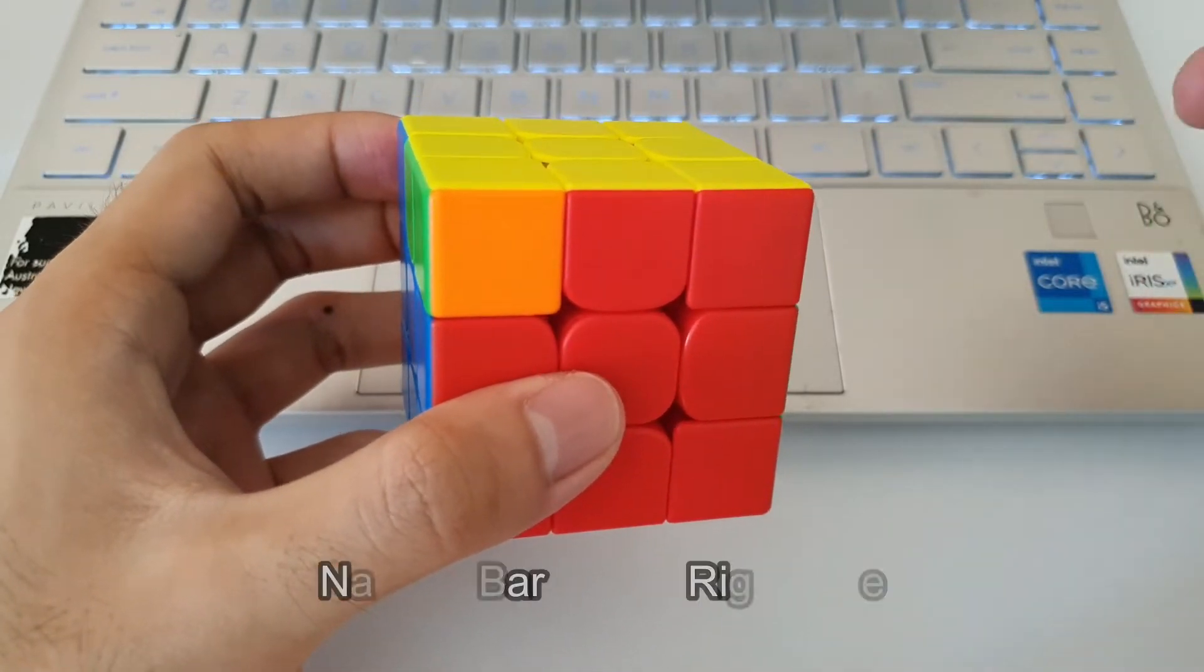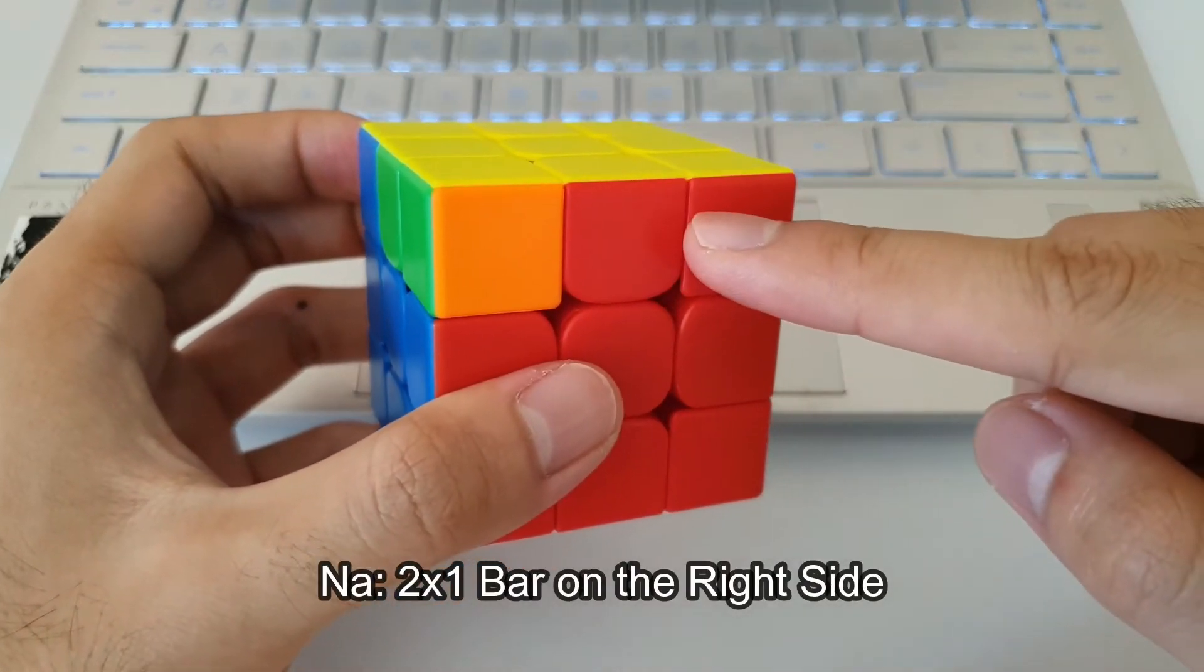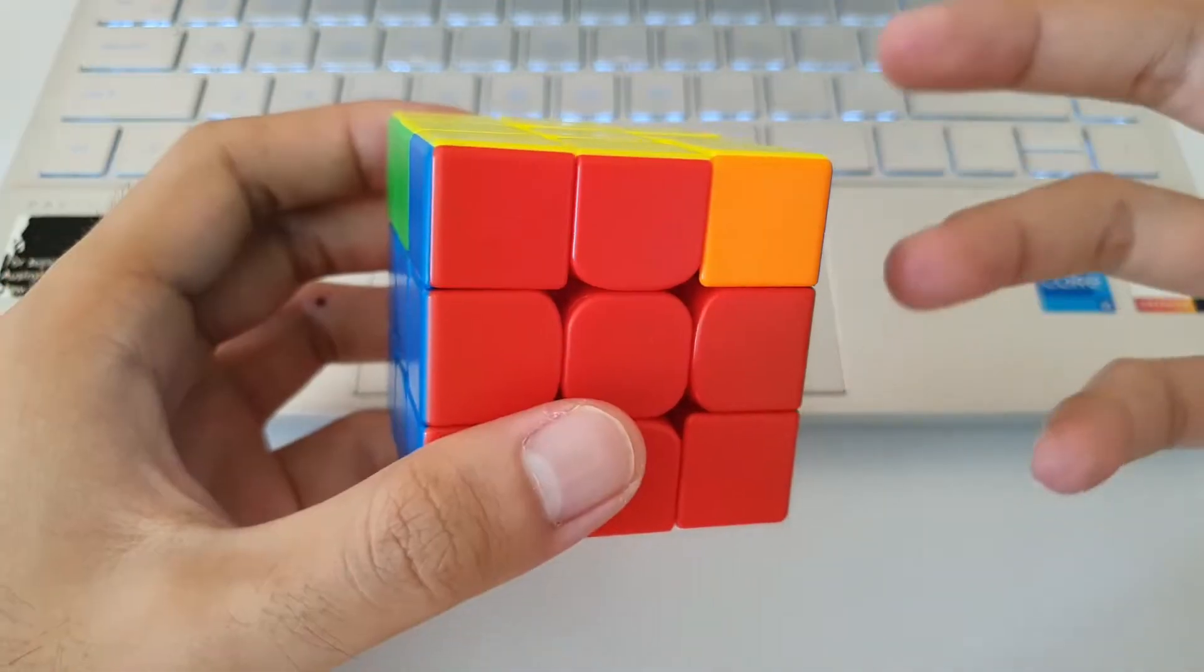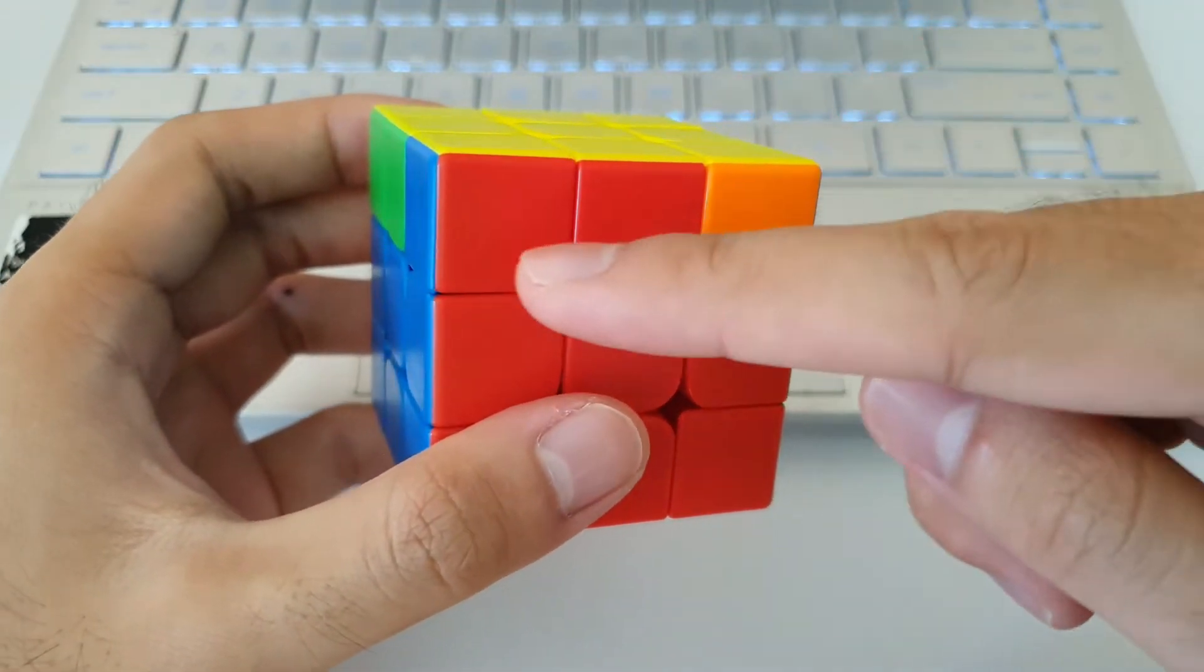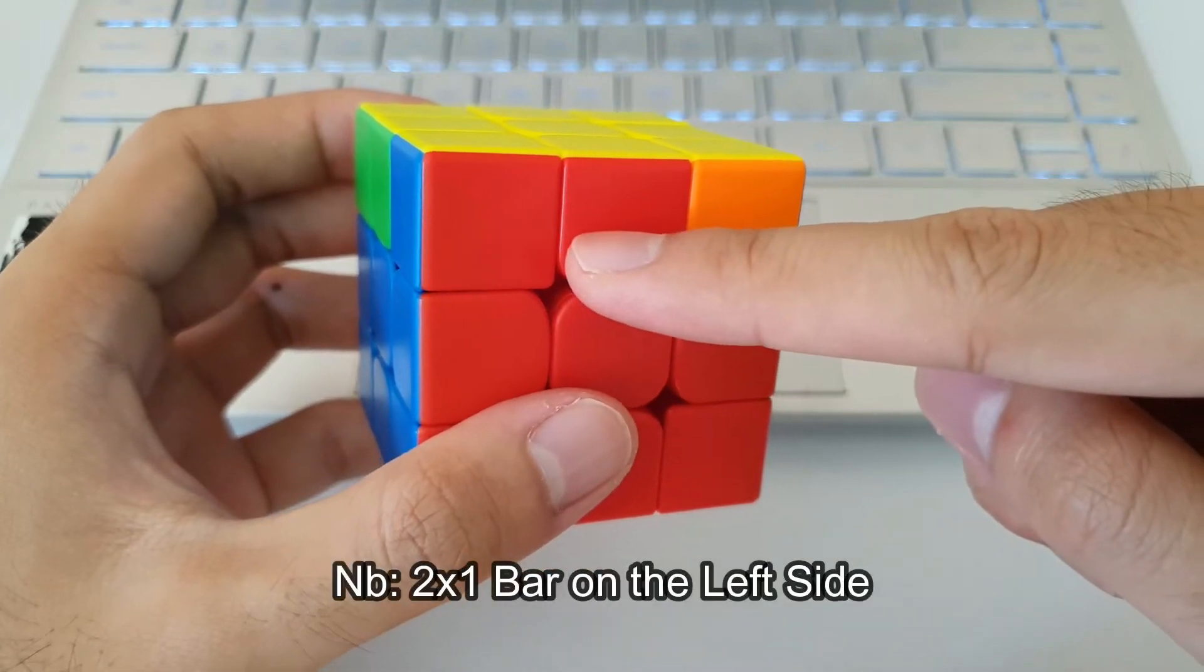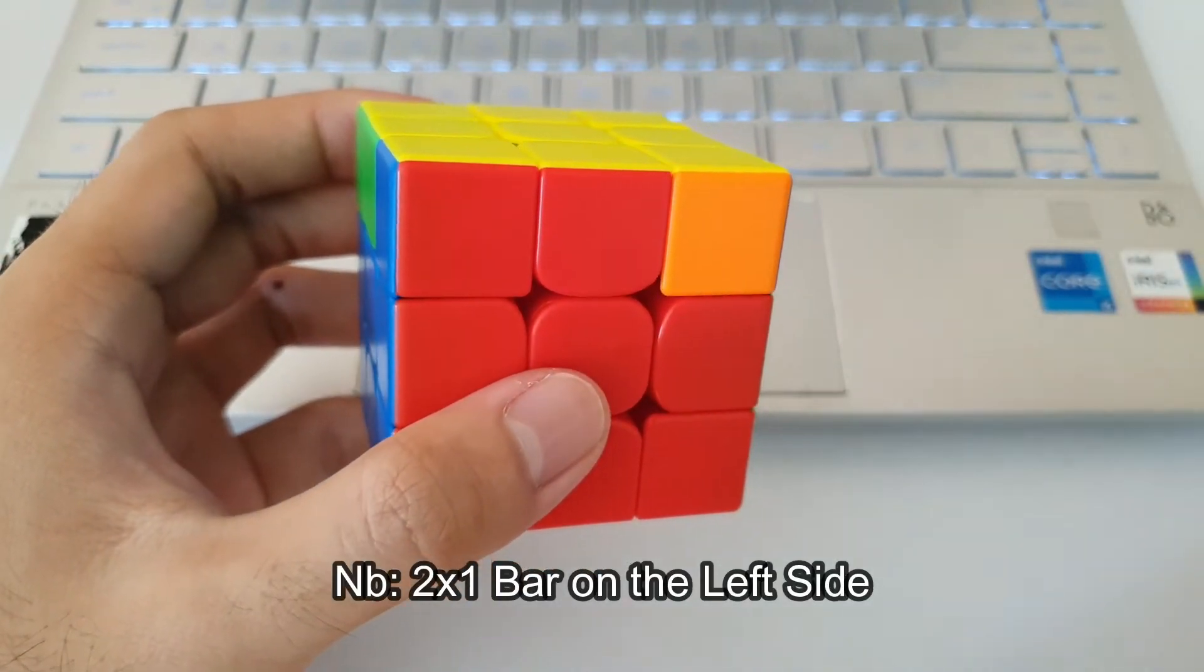is the Na perm because the 2x1 bar is on the right side of the cube. Whereas this, where we have the 2x1 bar on the left side of the cube, would actually be the Nb perm.